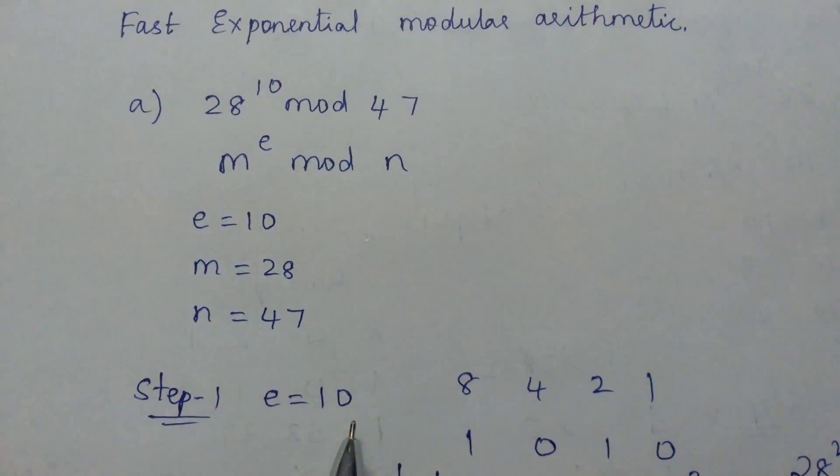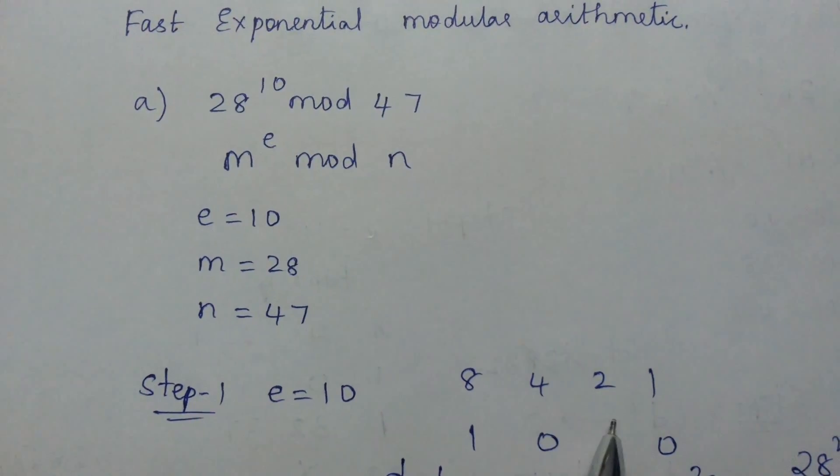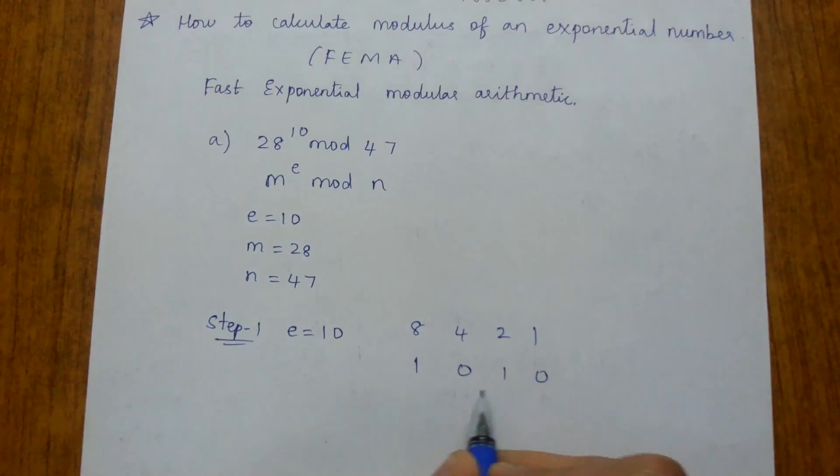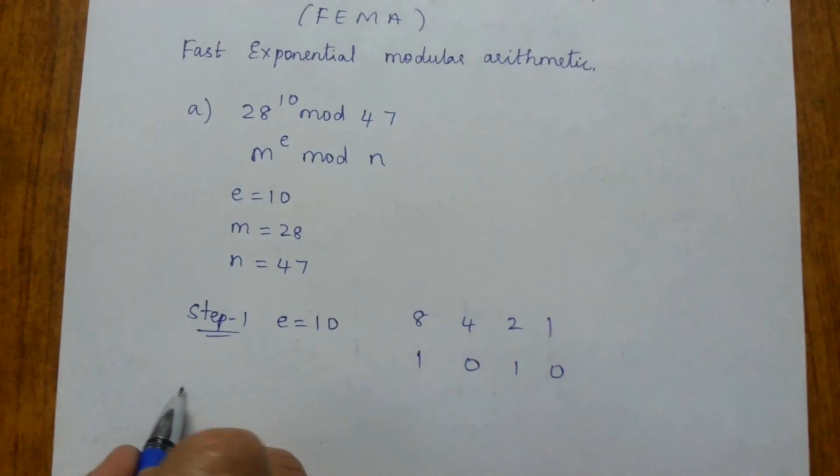First thing you have to do is write the value of e in binary form, that is 8421. Here we have the binary code of this number.